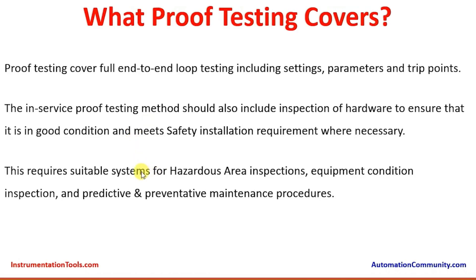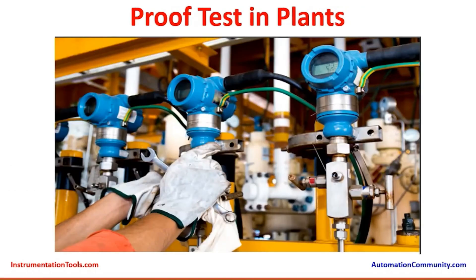This requires suitable systems for hazardous area inspections, equipment condition inspection, and predictive and preventive maintenance procedures. These are all the categories to be covered during proof testing maintenance. Here we see some pressure transmitters being calibrated or tested during proof testing, where the instrument technician or foreman is adjusting all the connections and ensuring that the systems are in healthy condition to continue operation.